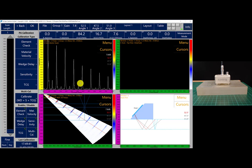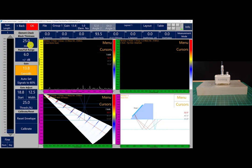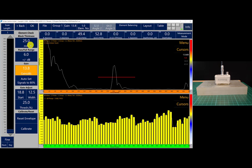Let's go into the element check calibration menu. Step one would be to set the block thickness. Our block is at 25mm.